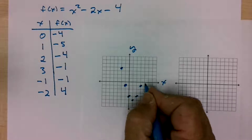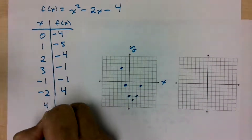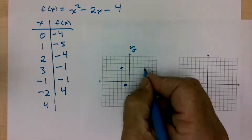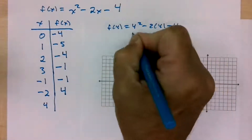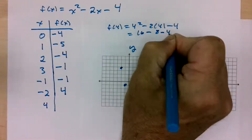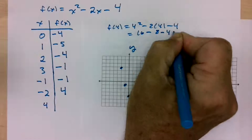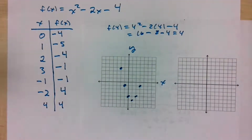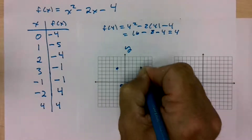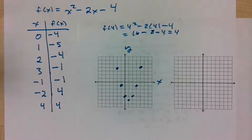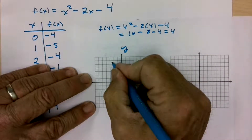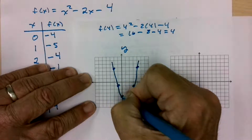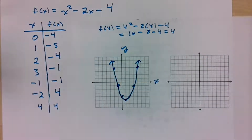Let's also check x equals 4: f of 4 is 4 squared minus 2 times 4 minus 4, which is 16 minus 8 minus 4, giving 4. So we get the additional point (4, 4). Connecting all the points nice and round at the bottom with arrows extending outward — that's the graph of that quadratic function.